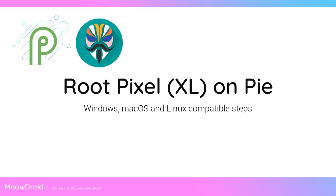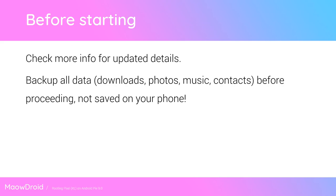So without beating around the bush, let's have a look at what we need to do before we get started. First up is to check the more info down below for any changed or updated details, and the other thing is to back up everything that's on your device that you need, such as your downloads, music, photos, contacts, SMS, whatever it is. Make sure you back all that up and get it off your phone and onto your computer.